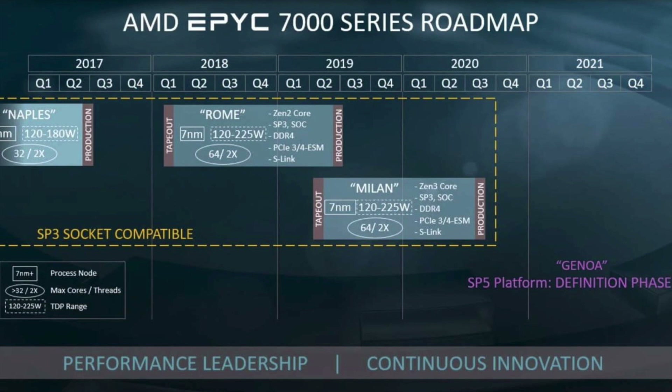So what's going to be different in Zen 3? We can get ideas about what improvements AMD might make in Zen 3 by looking at the weaknesses of Zen 2. I'm not even a chip designer, so if I can see a problem, then AMD's architects are surely aware of the same thing, and they have probably been thinking about how to improve it already.